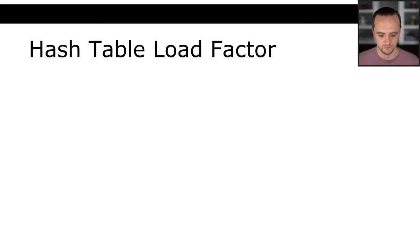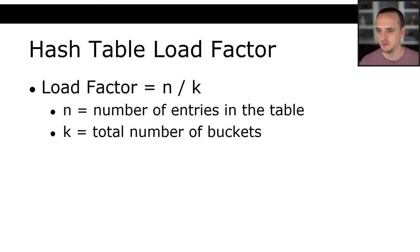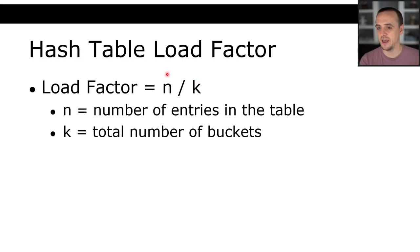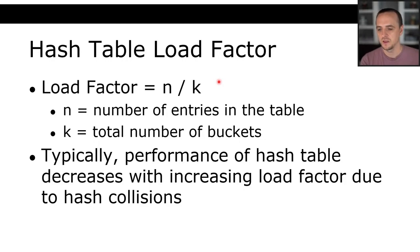The load factor for a hash table is computed as n divided by k, where n is the number of entries and k is the total number of buckets. For example, a hash table of size 1,000 with 500 entries has a load factor of 0.5. With 2,000 entries it would be 2. The performance of a hash table generally decreases with increasing load factor due to hash collisions.